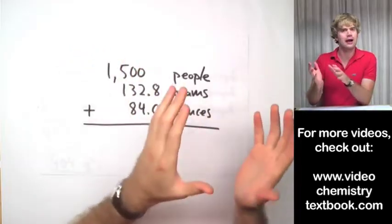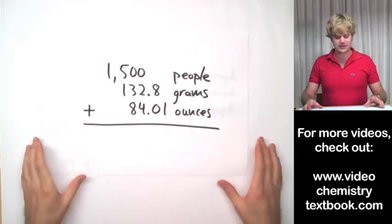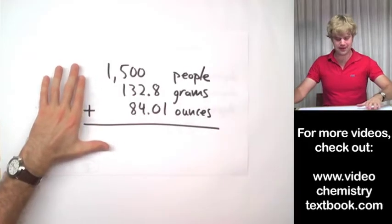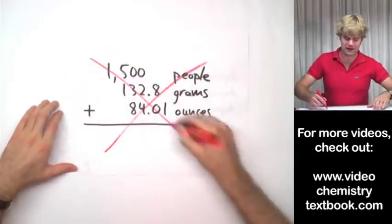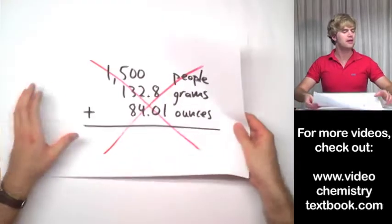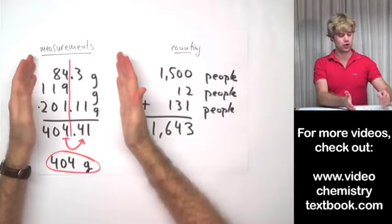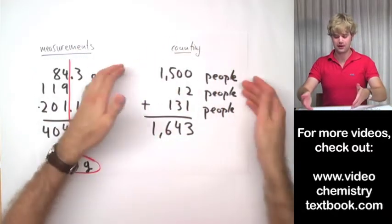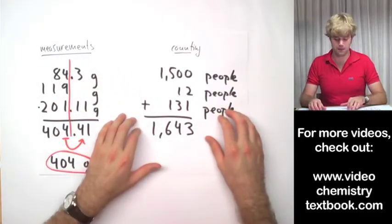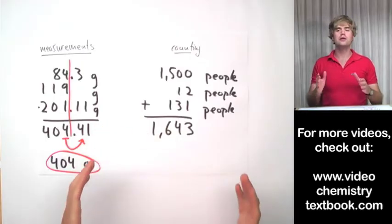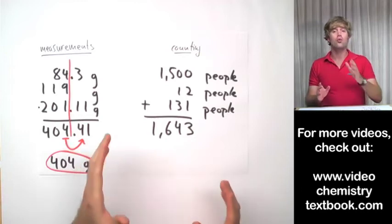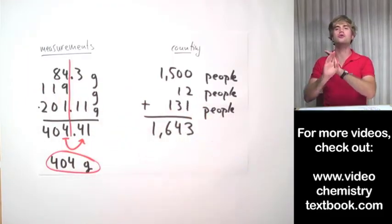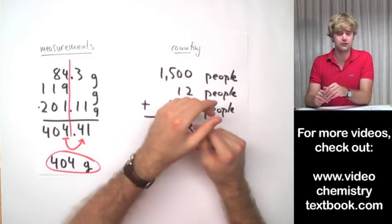As an end note, people sometimes ask about counting versus measurement numbers in addition and subtraction. It turns out you don't have to worry about it too often because we always add things with the same units — we'd never add people to grams to ounces. But it is good to keep in mind that when you're adding measurements, you use significant figures rules. When you're adding counting numbers, like the number of people in various groups, you don't use significant figures rounding. To summarize: we use sig fig rules when dealing with measurements. Counting numbers have an infinite number of significant figures, so we never have to worry about rounding those.